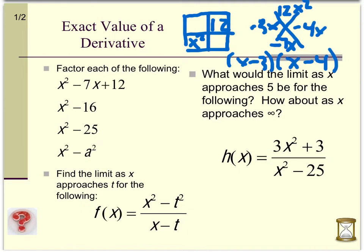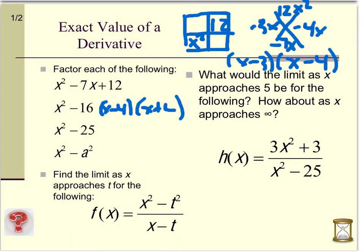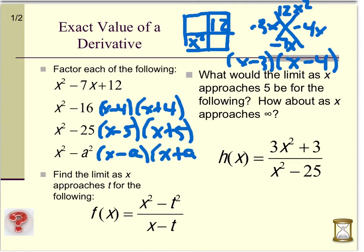So x squared minus 7x plus 12 factors as x minus 3 times x minus 4. Next, x squared minus 16 has no x term, meaning it's like 0x. I need two numbers that multiply to negative 16 and add to 0, so x minus 4 times x plus 4. Negative 4 times positive 4 is negative 16, and they add to 0. Similarly, x squared minus 25 factors as x minus 5 times x plus 5. I'm starting to see a pattern: x squared minus a squared equals x minus a times x plus a.